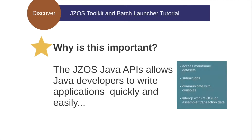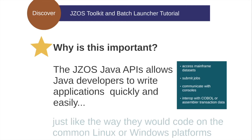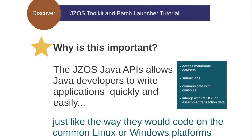Services like accessing traditional mainframe datasets, submitting jobs, communicating with system consoles, or interoperability with COBOL or assembler transaction data. The JSOS Java APIs allow Java developers to write applications quickly and easily, just like they would code on the common Linux or Windows platforms.